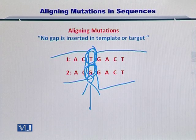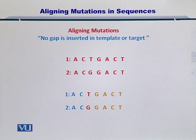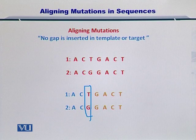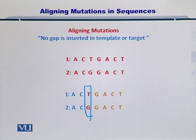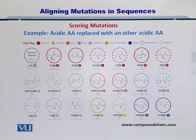And how do we represent it? We simply write them on top of each other. As you can see, this portion is the substituted or mutated nucleotide.